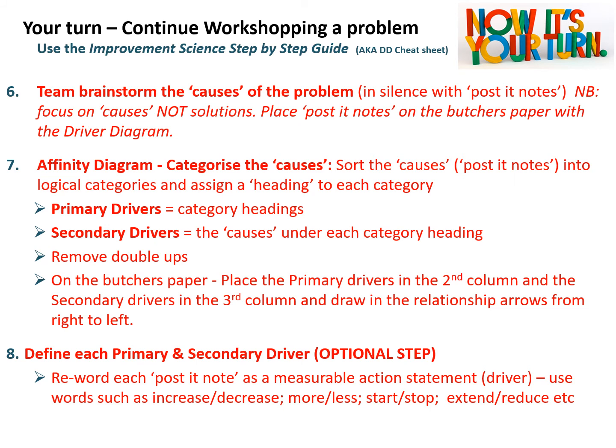Step seven is forming an affinity diagram — look at all the post-it notes, sort them into logical categories or themes, and assign a heading to each category. The category headings become your primary drivers and the causes under each heading become your secondary drivers. Remove any duplicates and collapse similar items together as a team. On the butcher's paper, place the primary drivers in the second column and the secondary drivers in the third column, and draw relationship arrows from right to left — secondary drivers to the relevant primary drivers, then primary drivers to the aim statement.